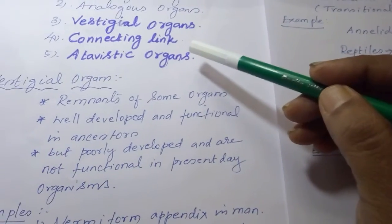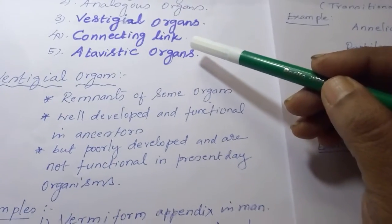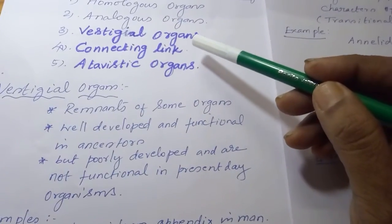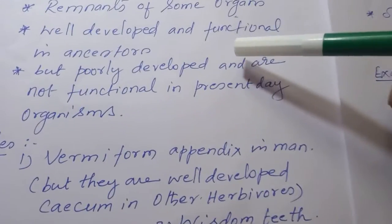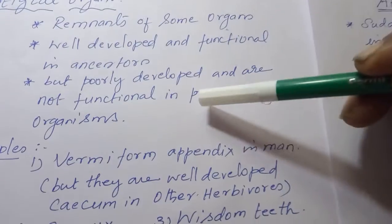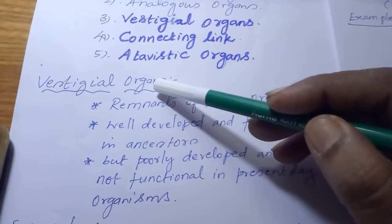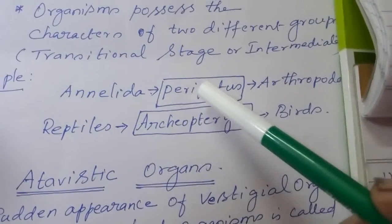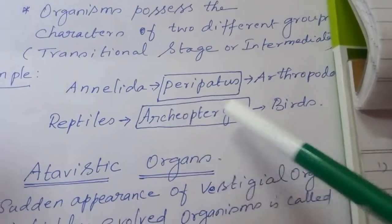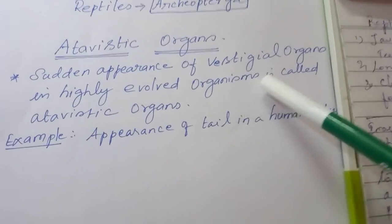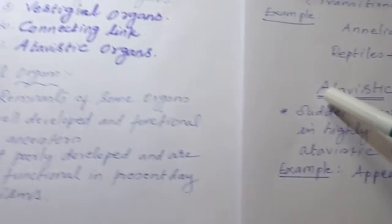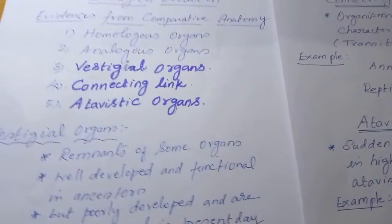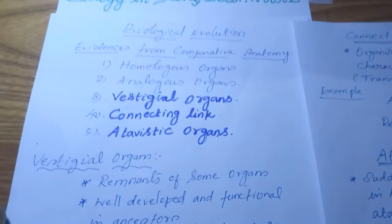To summarize: vestigial organs are organs that were larger and functional in ancestors but are poorly developed and non-functional in the present-day highly evolved organism. Connecting links stand between two groups of organisms. Atavistic organs are the sudden reappearance of vestigial organs. These are the three concepts we discussed today. Thank you very much for listening.